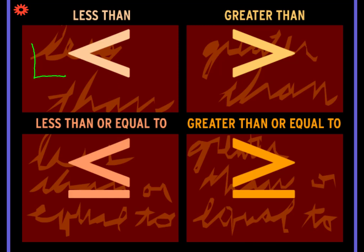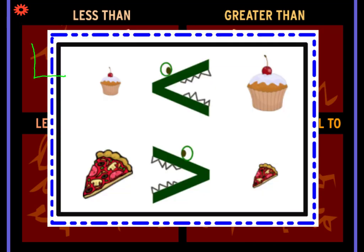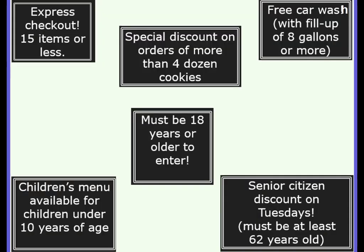If you get confused about which is less than and which is greater than, think about the alligator — the alligator eats the larger item. Here the small cupcake is less than the big cupcake, so the alligator's mouth opens toward the larger cupcake. And if the alligator's mouth is open toward the left, the larger pizza is greater than the smaller pizza.